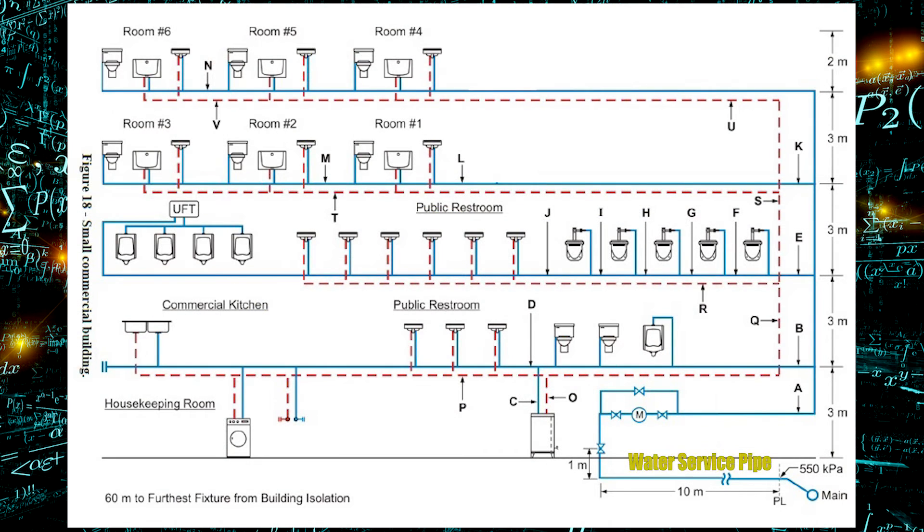Let's look at the water service pipe first. Water service pipe travels between the water main and the main building shutoff. There is 550 kPa at the main but we will travel up by one meter meaning we're going to lose a little bit of pressure from that.